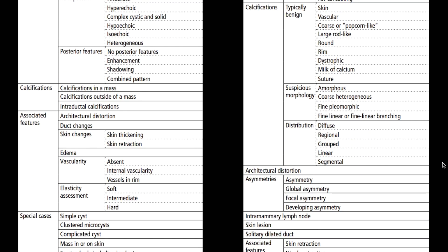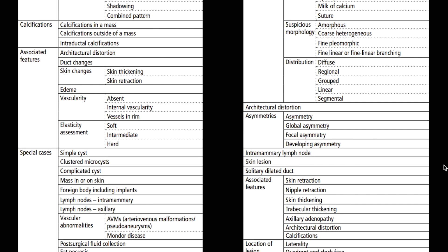On mammograms we also want to describe architectural distortion and asymmetry. Asymmetry has four descriptors: asymmetry, global asymmetry, focal asymmetry, and developing asymmetry. For lymph nodes, intramammary lymph nodes are usually located in the outer quadrant. While a lymph node there is fairly common, it's also a site for cancer, so we have to be careful when assessing lymph nodes in general.